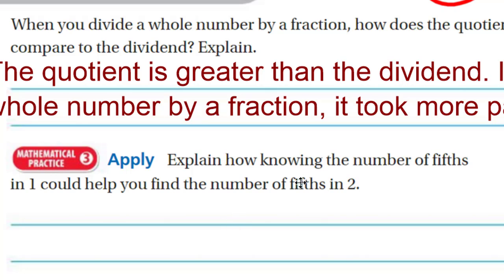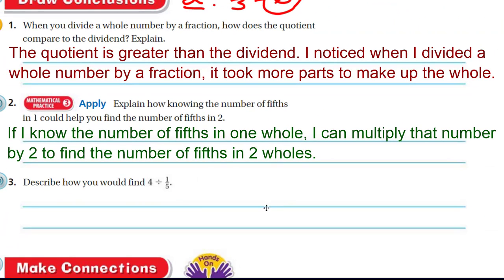Okay. Apply. Explain how knowing the number of fifths in that first problem, the number 1, could help you find the number of fifths in 2. Well, if I know how many fifths there are in 1, then I could multiply that number by 2 to find the number of fifths in 2. So in this problem, if there are 5 fifths in 1 whole, then I could take the 5 and multiply that by the 2, which would give me 10. Let's go ahead and write down that understanding. Ding! And here we go. So if I know the number of fifths in 1 whole, I can multiply that number by 2 to find the number of fifths in 2 wholes.